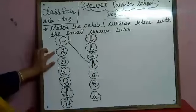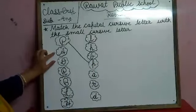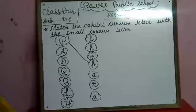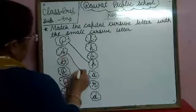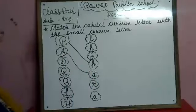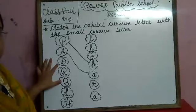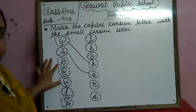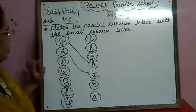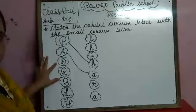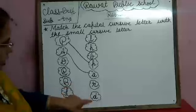Which letter is this? Capital cursive A. So, match the capital cursive A with the small cursive A. Which letter is this? Capital cursive D. So, match the capital cursive D with the small cursive D.